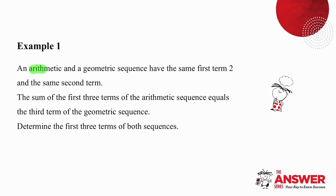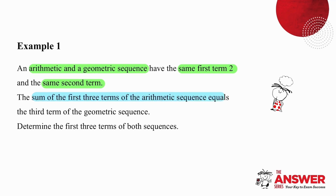In the first example, we have an arithmetic and geometric sequence with the same first term of 2 and the same second term. We know that the sum of the first three terms of the arithmetic sequence equals the third term of the geometric sequence. What we need to do is determine the first three terms of both sequences.